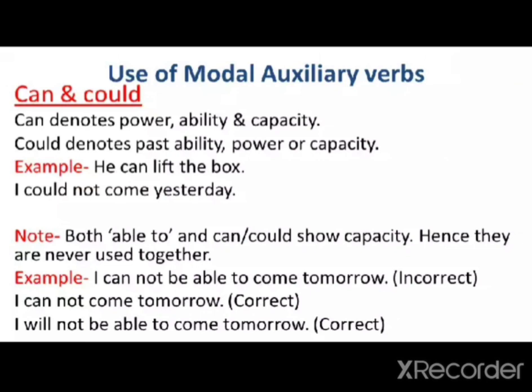Use of modal auxiliary verbs 'can' and 'could.' We have seen the word 'would'; now let us see more details about 'can' and 'could.' 'Can' denotes power, ability, and capacity. 'Could' denotes past ability, power, or capacity. Listen very carefully to the difference: 'can' denotes power, ability, and capacity, whereas 'could' denotes past ability, power, or capacity.